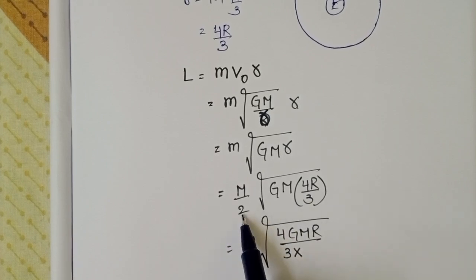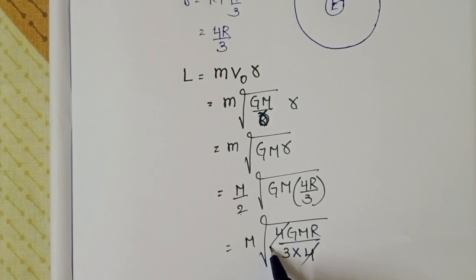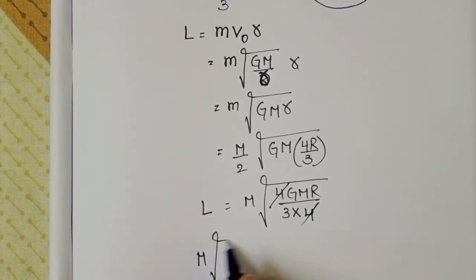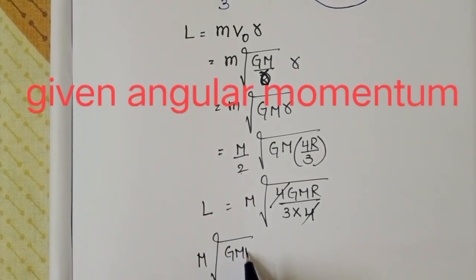This becomes m times square root of GMr/3. When we write the 2 in the square root, it becomes 4. The 4 gets cancelled. So L equals m times square root of GMr/x.